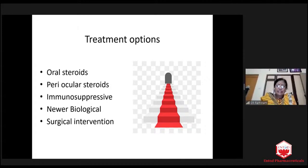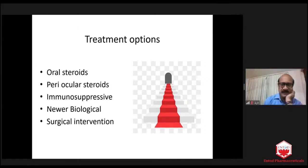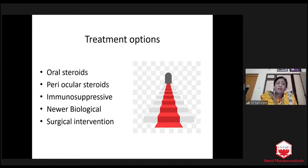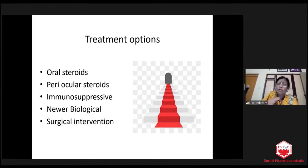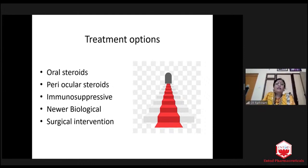Oral steroid is extremely important to start with. If cystoid macular edema is there, it is not only periocular steroid, but we may need intravitreal steroid or Ozurdex. And if by chance they have neovascularization, they definitely need Ozurdex. Then comes the immunosuppressive. Immunosuppressive — we have to have all available: azathioprine, methotrexate, MMF, and cyclophosphamide. Some of my children are on adalimumab — a wonderful drug, but extremely expensive.